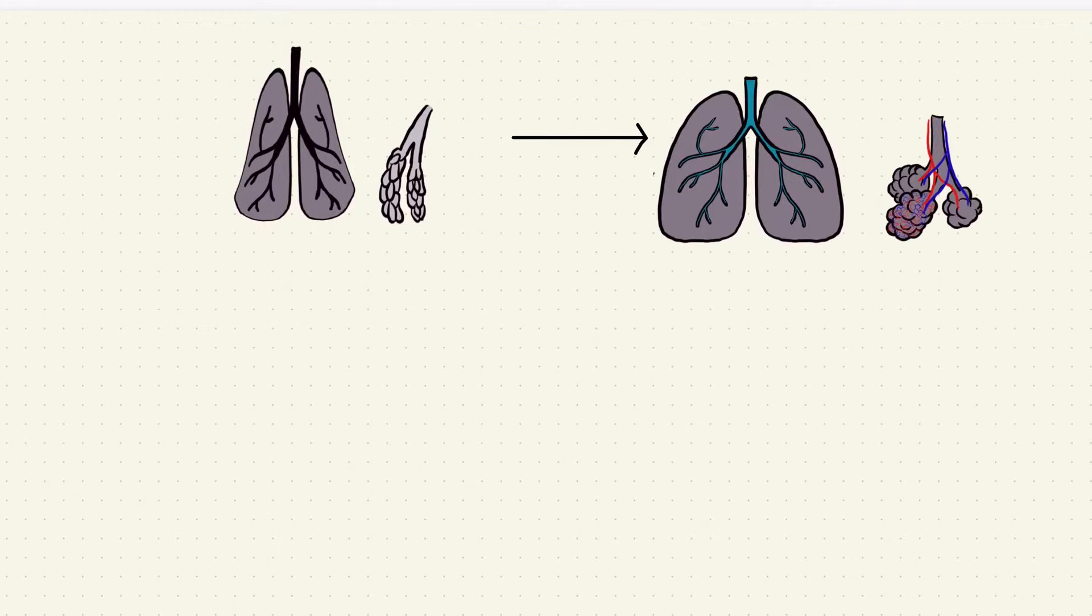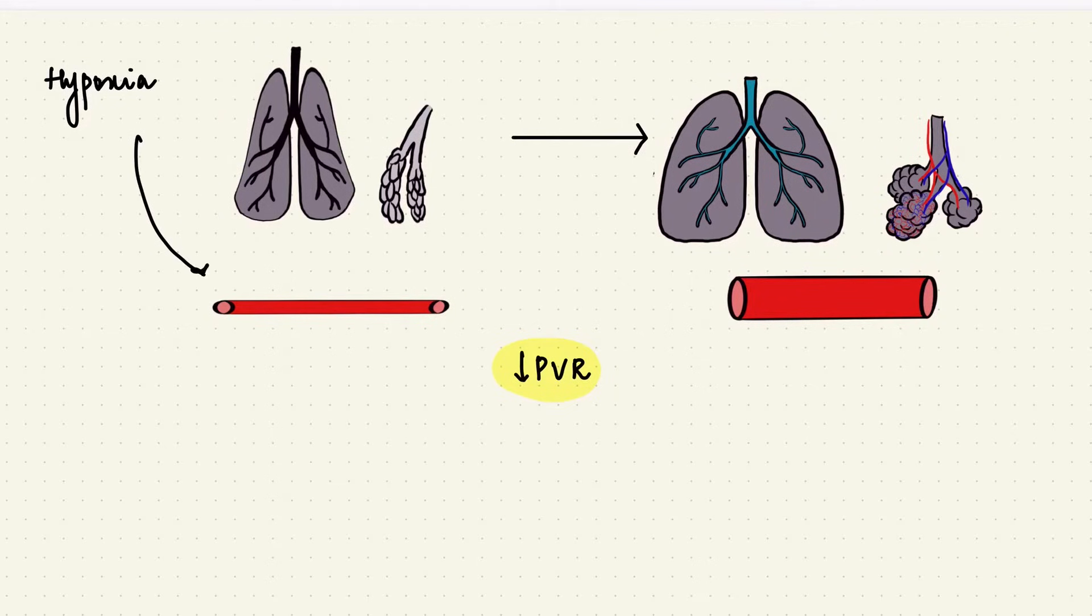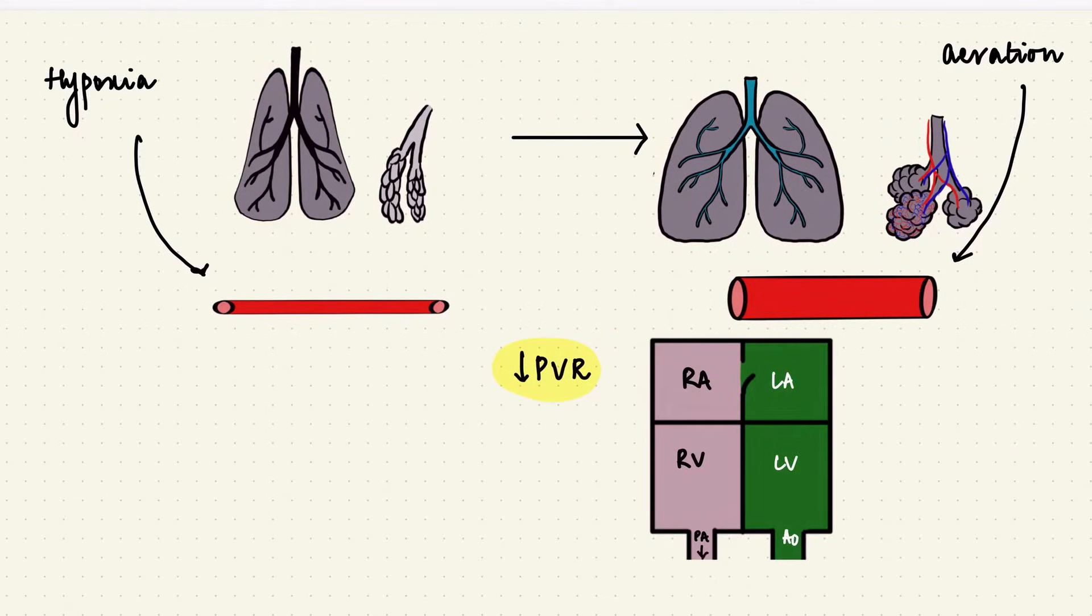So what happens at birth? The baby takes a breath and the lungs expand. The vessels are no longer compressed, so the resistance to flow is lesser. So the pulmonary vascular resistance will fall. During fetal life, there's some amount of hypoxia. That keeps the pulmonary vessels constricted. But once there's aeration, there's vasodilation. So that also reduces the pulmonary vascular resistance. That in turn causes a reduction of the pulmonary artery pressure, the right atrial and the right ventricular pressure.